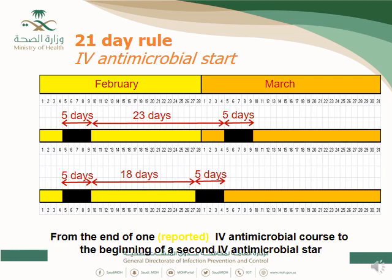In an exercise example: if a course is 5 days and you count from the end of the first course to the beginning of the next, if the interval is 21 days or more (e.g., 23, 25, 26 days), you consider it a new antimicrobial start. If it is fewer than 21 days (e.g., 20, 19, 10, 5), you do not count it as a new event — it is similar to repeated events excluded in CLABSI, VAP, and CAUTI.